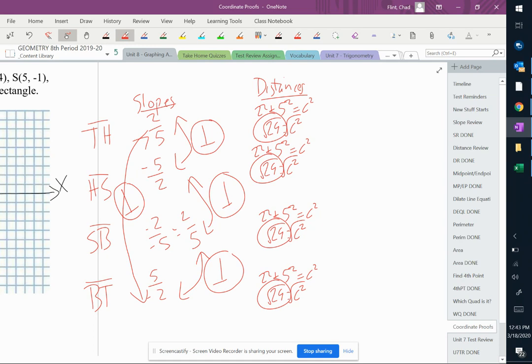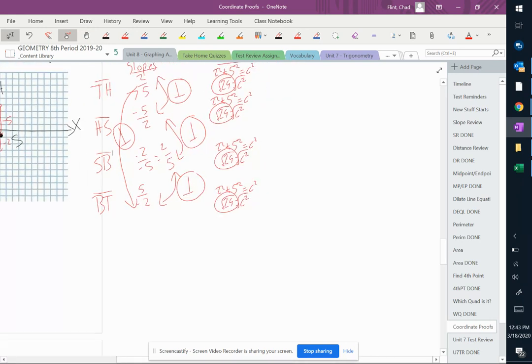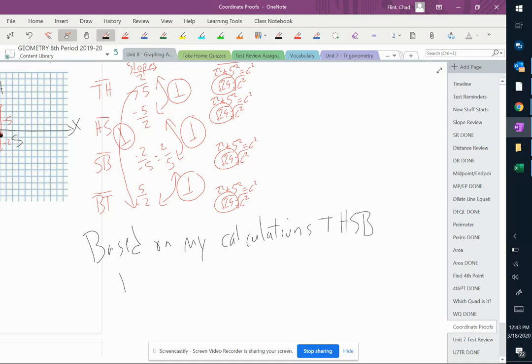So that's all we're going to talk about in our statement down here. We're going to say, 'Based on my calculations, THSB is a rectangle.'